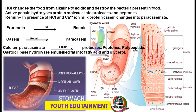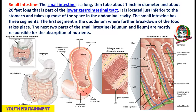HCl and many types of enzymes are present in the stomach. HCl changes the food from alkaline to acidic and destroys bacteria present in food. HCl converts pro-rennin to rennin, and also converts casein, which is then converted to calcium paracaseinate. In the presence of pepsin, it is converted into proteoses, peptones, and polypeptides.